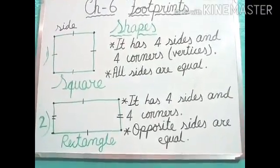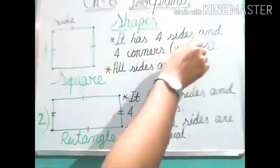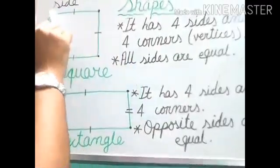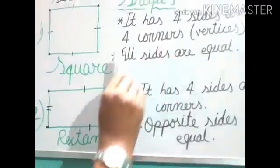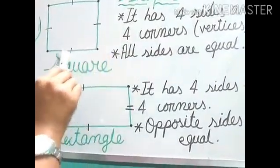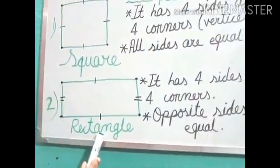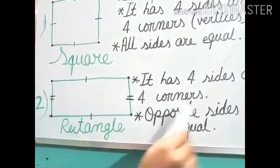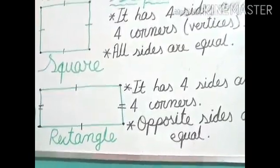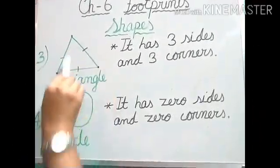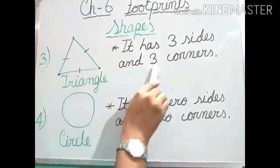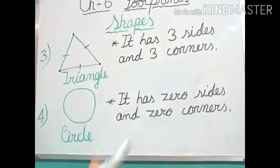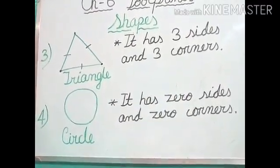Now let us recap. Square — first shape — it has four sides and four corners, and all sides are equal. Number two, rectangle: it has also four sides and four corners, and opposite sides are equal. Triangle: it has three sides and three corners. Circle: it has no sides — means zero sides — and zero corners, or we can say no corner.